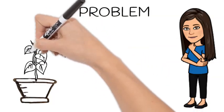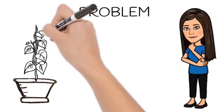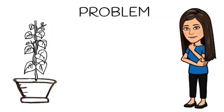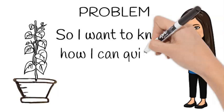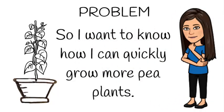I recently started gardening and was able to grow a pea plant. The problem is that one pea plant does not give me enough peas to make an entire meal. So I want to know how quickly I can grow more pea plants.